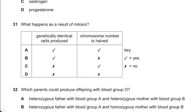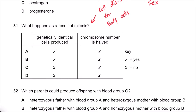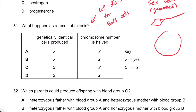Question 31: What happens as a result of mitosis? Mitosis is the cell division for body cells. As we talked before, body cells are different from sex cells, so-called gametes. Sex cells, or gametes, are like sperms or eggs.